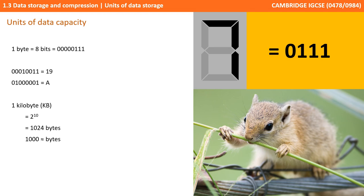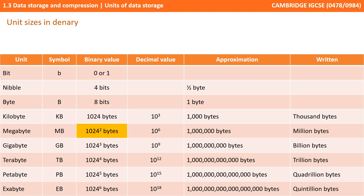Even 1,000 bytes is not enough capacity to store most files, and therefore we have a need for higher units of measurement. Here are the units of measurement you need to know for the GCSE exams. You will notice that the binary values of these units are calculated by powers of 1,024. Therefore, a megabyte is 1,024 multiplied by 1,024 bytes — or expressed another way, 1,024 to the power 2, which is 1,048,576 bytes.